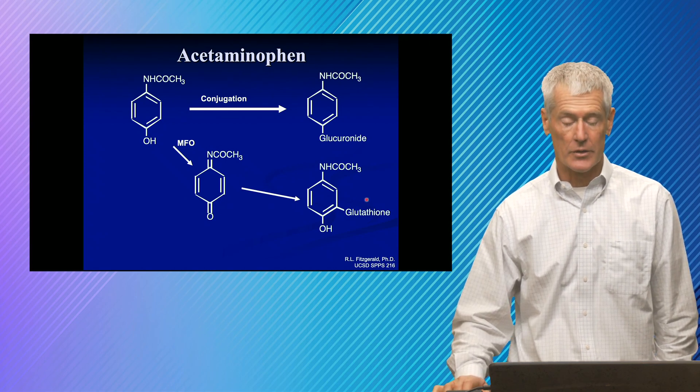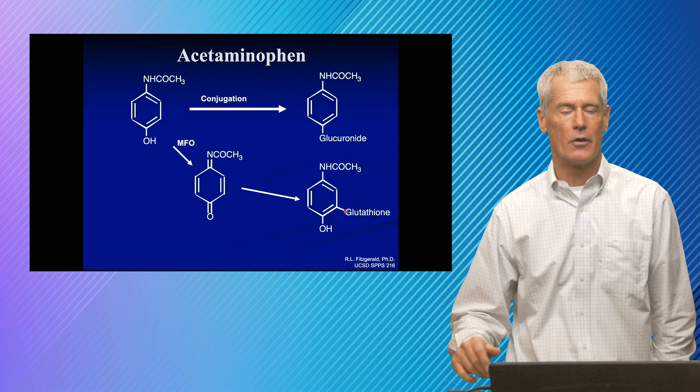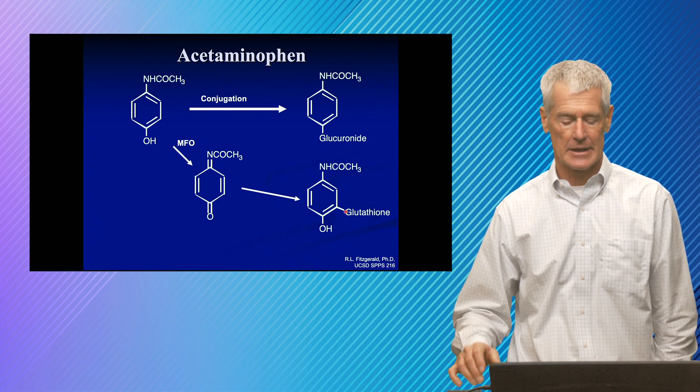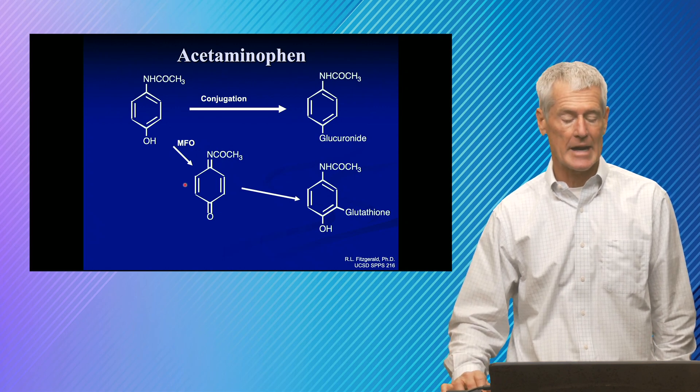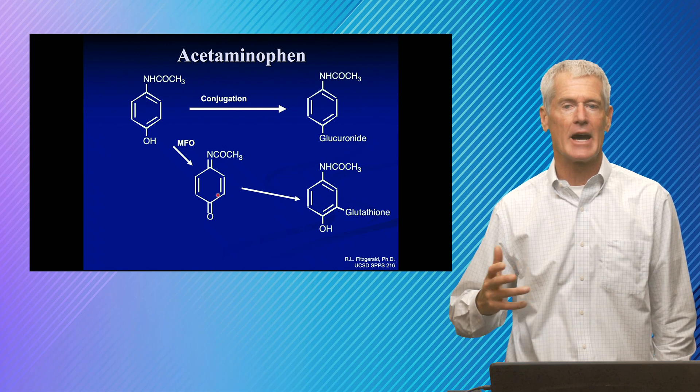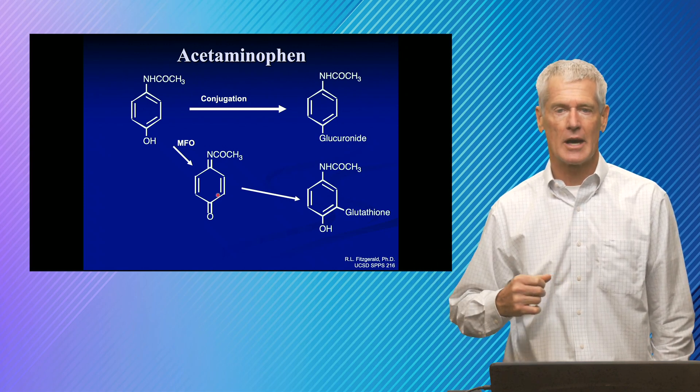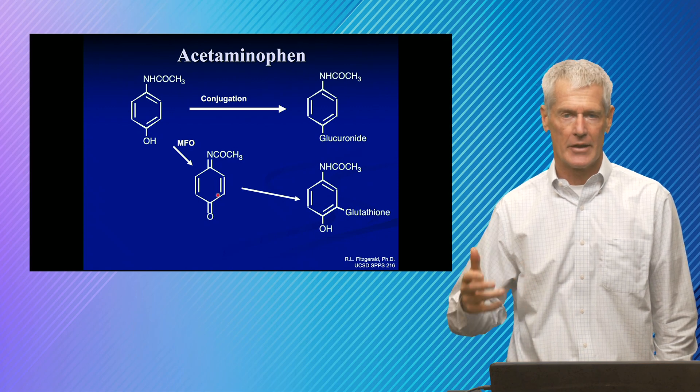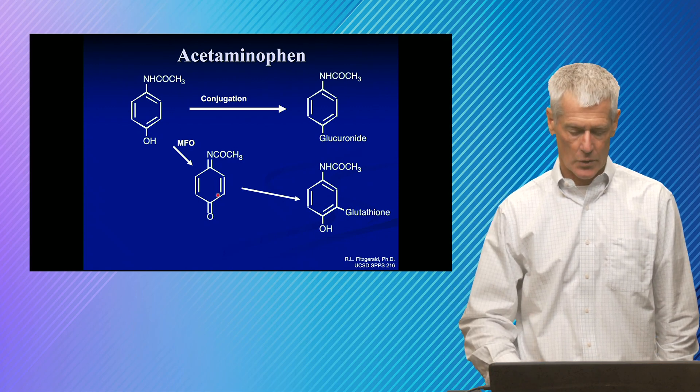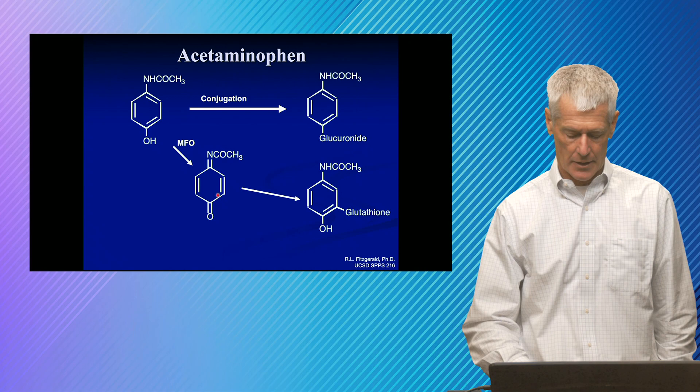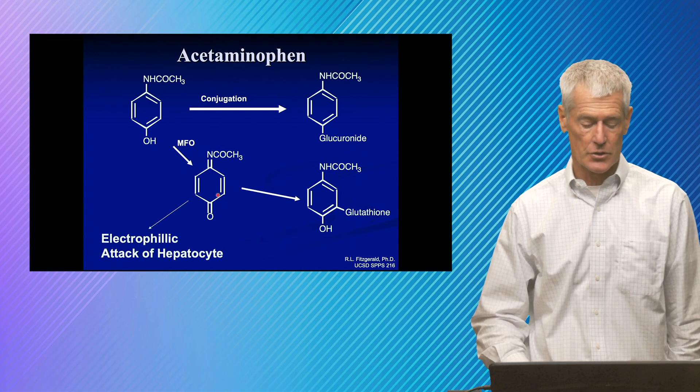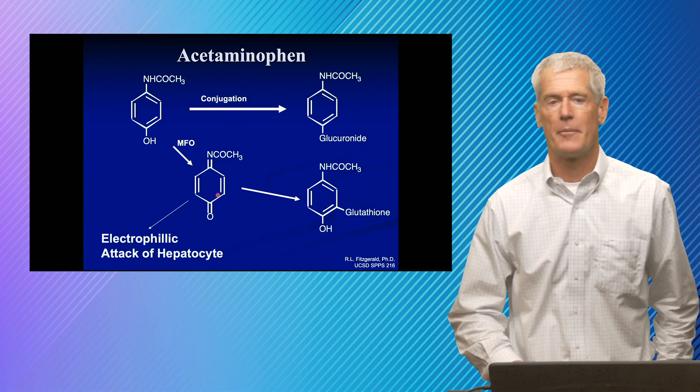However, when the glutathione is depleted, and that's what happens in an overdose, is that glutathione gets depleted. This is so reactive that it never makes it out of the tissue that forms it. And in the liver, we get central lobular necrosis because that's where it's being formed. And so it's attacking the tissue, in particular the hepatocytes.